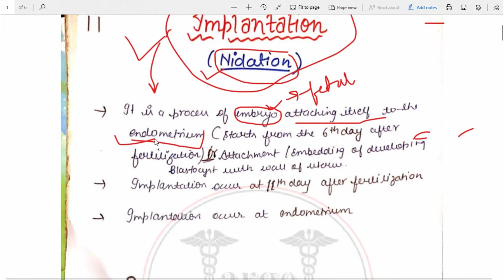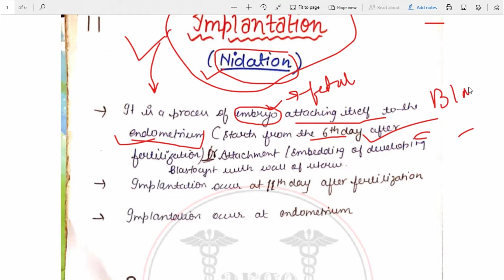The endometrium is the wall of the uterus. So implantation is a process of the embryo attaching itself to the endometrium. This process starts from the sixth day after fertilization, when the blastocyst is formed. As we saw in the pre-embryonic period, blastocyst formation occurs on the sixth day.